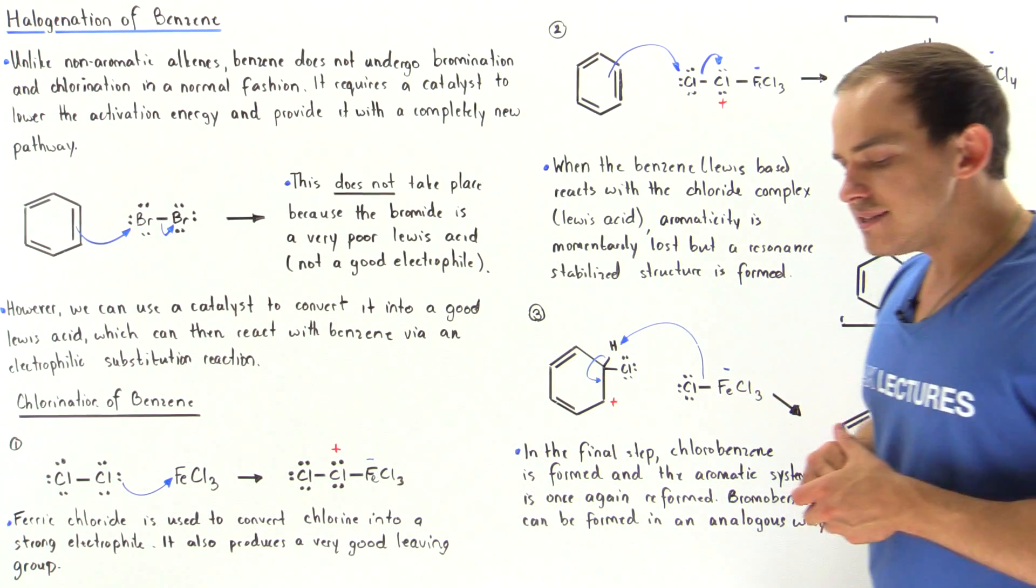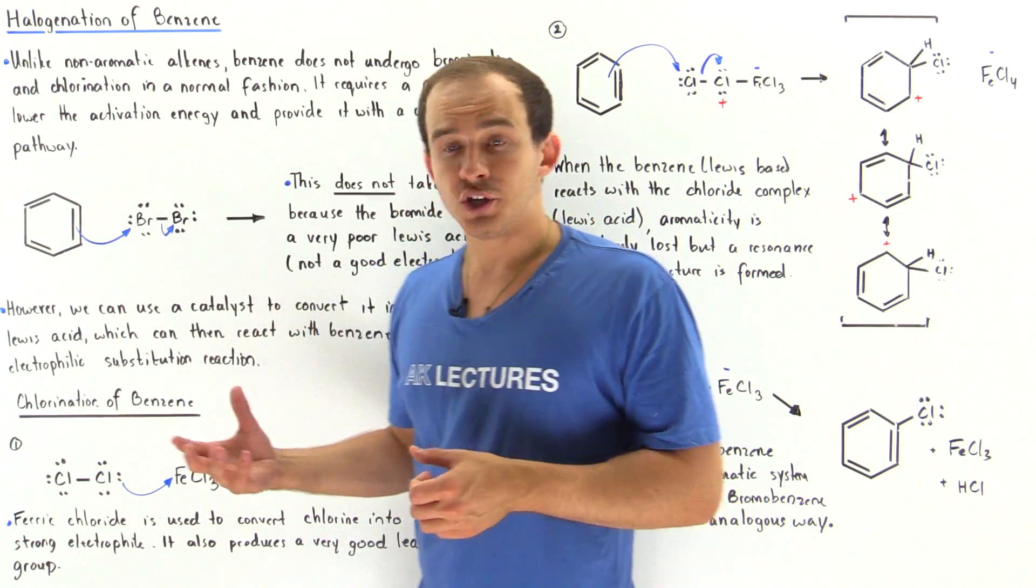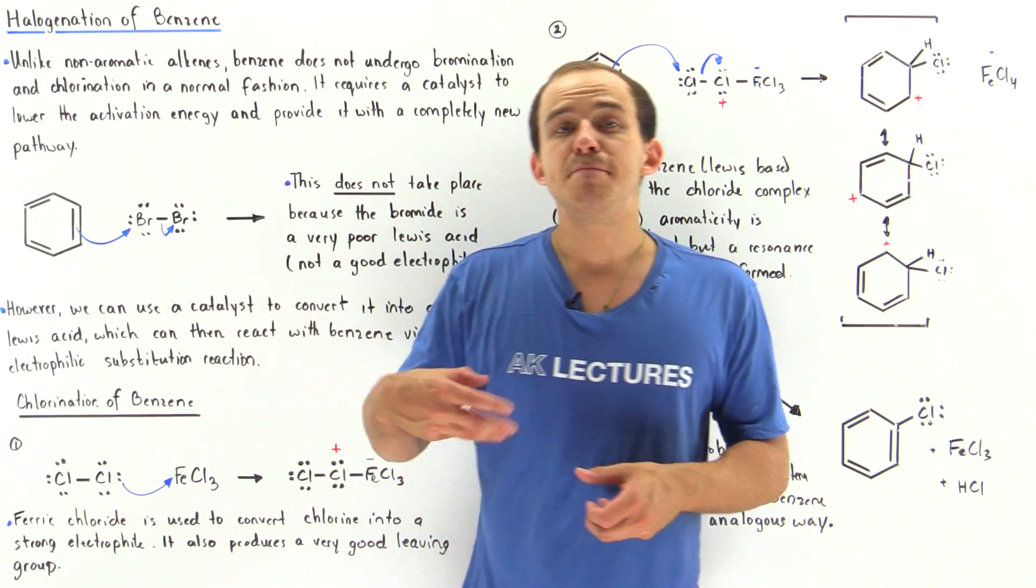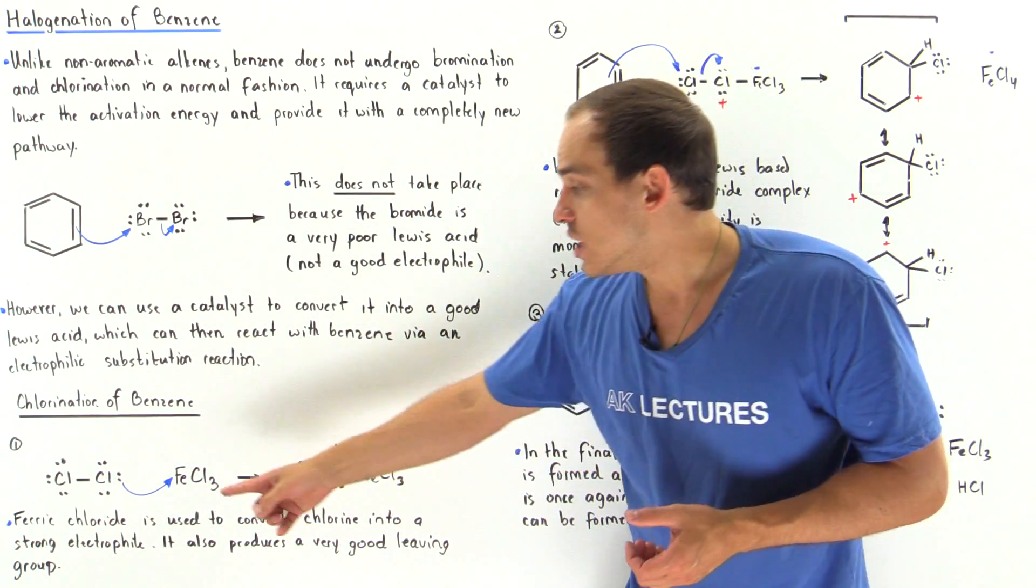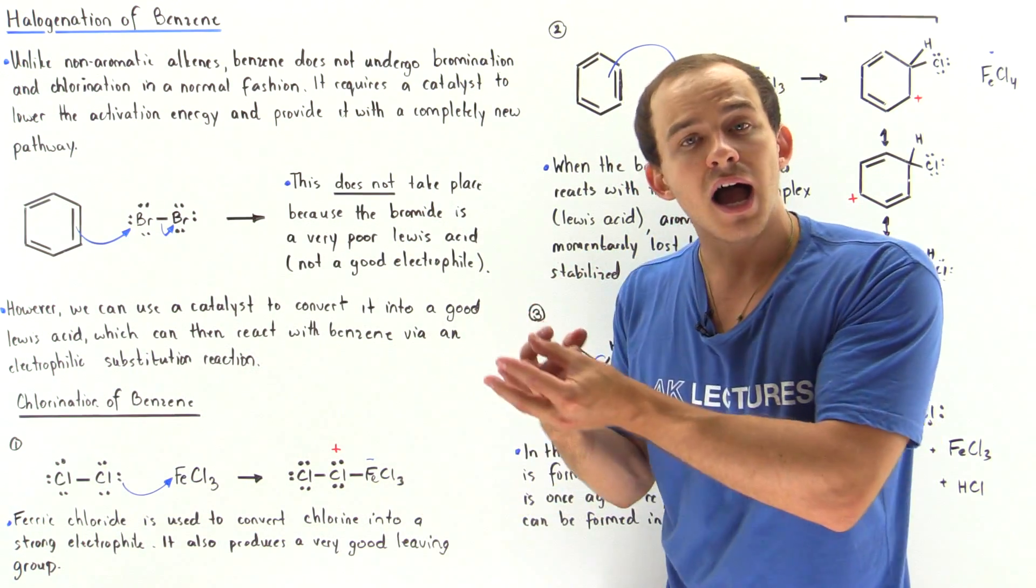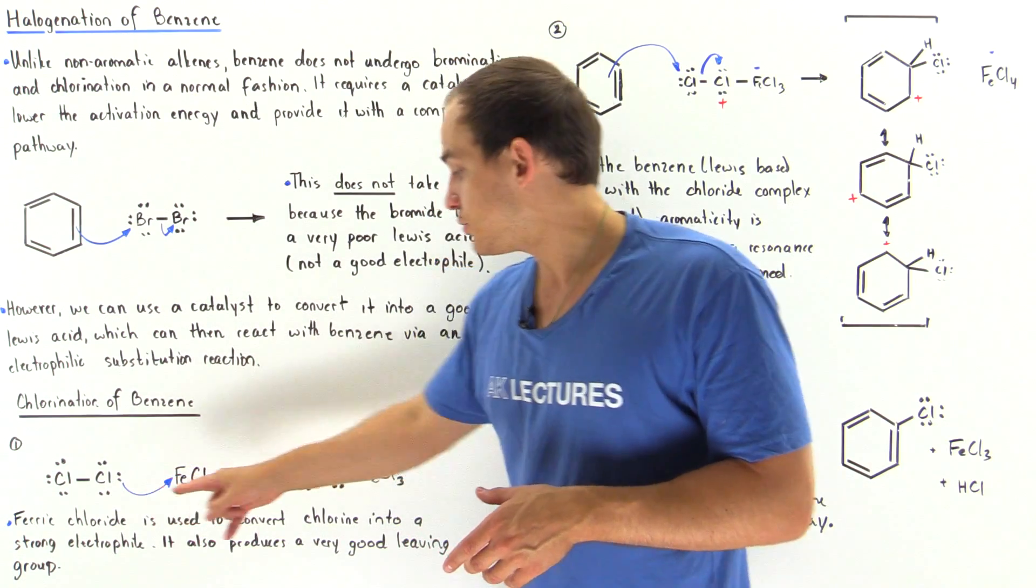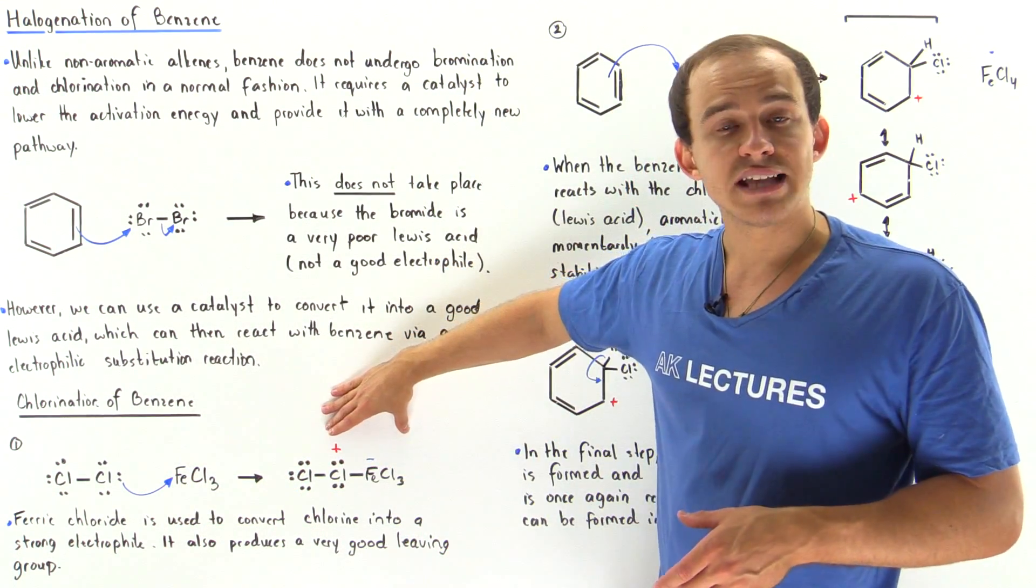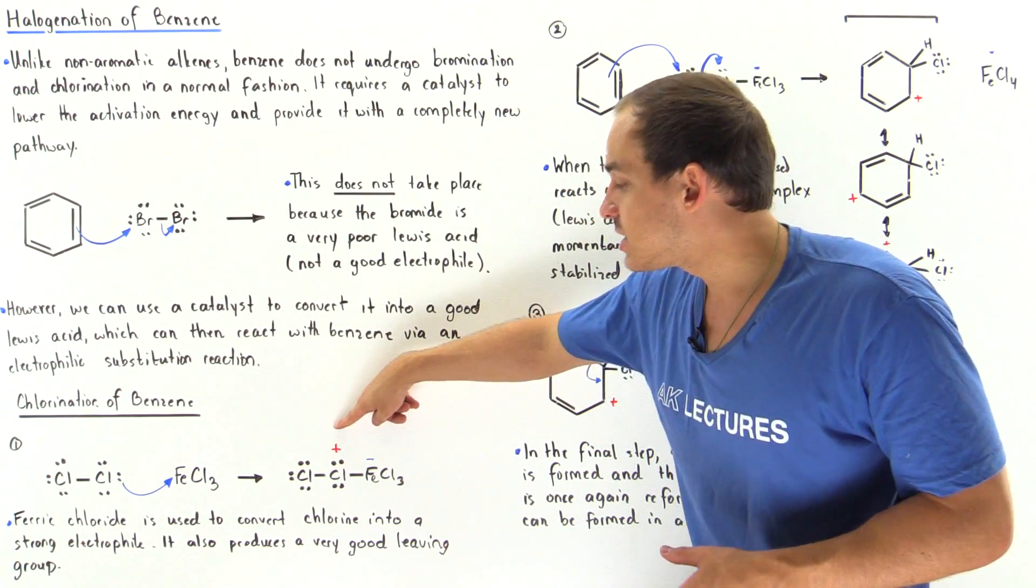We first take our chlorine molecule and mix it with our catalyst, ferric chloride (FeCl3). What it basically does is it binds to our chlorine molecule as shown in the following step. This complex now contains two things.